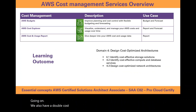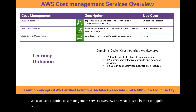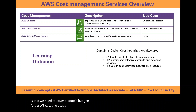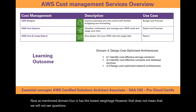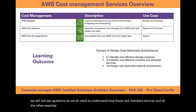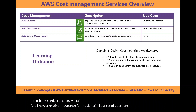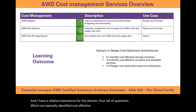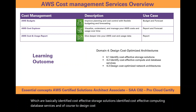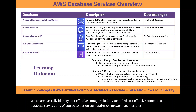For AWS cost management services, the exam guide covers AWS Budgets, AWS Cost Explorer, and AWS Cost and Usage Report. Although Domain 4 has the lowest weightage, we will still see questions, so we need to understand how these cost management services relate to identifying cost-effective storage solutions, cost-effective compute and database services, and designing cost-optimized network architectures.